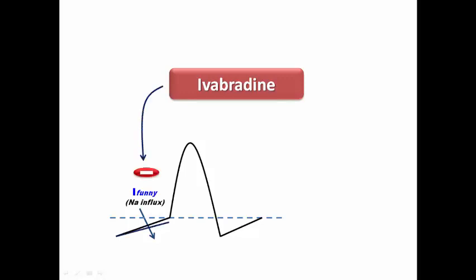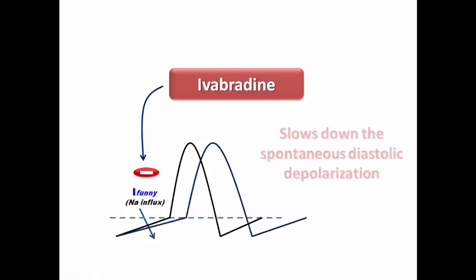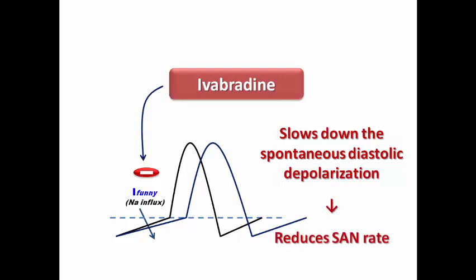When it blocks the funny channels, this results in slowing down the spontaneous diastolic depolarization in the SA node, resulting in reduction of the SA node rate. So it controls the heart rate via the SA node rather than the AV node. Ivabradine acts by a completely different mechanism from beta blockers — it acts on the channel rather than the receptors, predominantly on the SA node, resulting in negative chronotropic effect as its predominant pharmacological effect.